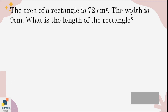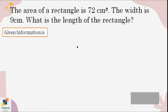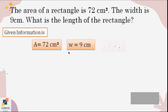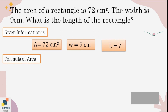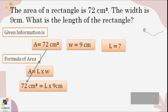The first example: the area of a rectangle is 72 centimeters squared, the width is 9 centimeters — what is the length? First, we sort out the given information. We know the area is 72 cm², width is 9 cm, and the length is missing, so we write a question mark for it. We write the formula for area and put the values in: 72 cm² in place of A, and 9 cm in place of W.